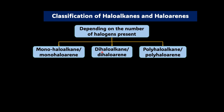Similarly, if two halogens are present on an alkane chain, we will call it dihaloalkane, and if two halogens are present on a benzene ring, we will call it dihaloarene. And if more than two halogens are present on an alkane or arene, accordingly we shall call it poly-haloalkane or poly-haloarene respectively.